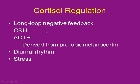Cortisol regulation: CRH from the hypothalamus, ACTH from the anterior pituitary. ACTH is actually made from pro-opio-melano-cortin, which is inactive. When split and activated, it makes three different hormones: ACTH (the cortin part), a melanocyte-stimulating hormone, and an opiate hormone.